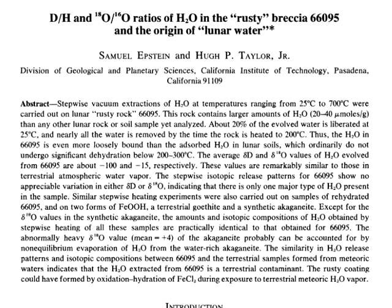Similar stepwise heating experiments were also carried out on samples of rehydrated 66095 and on two forms of ferric oxide hydroxide — a terrestrial goethite and a synthetic akaganeite. Except for the oxygen-18 values in the synthetic akaganeite, the amounts and isotopic compositions of H2O obtained by stepwise heating of all these samples are practically identical to that obtained for 66095. The similarity in H2O release patterns and isotopic compositions between 66095 and the terrestrial samples formed from meteoric waters indicates that H2O extracted from 66095 is a terrestrial contaminant.